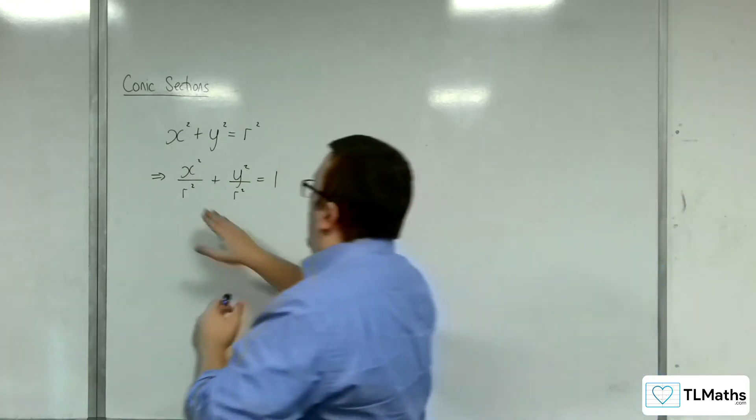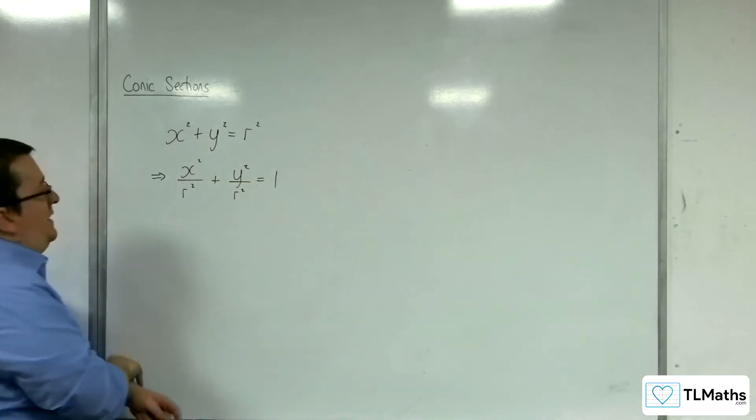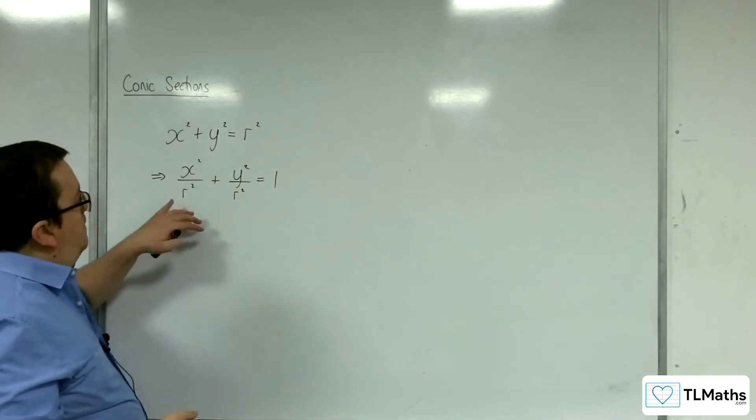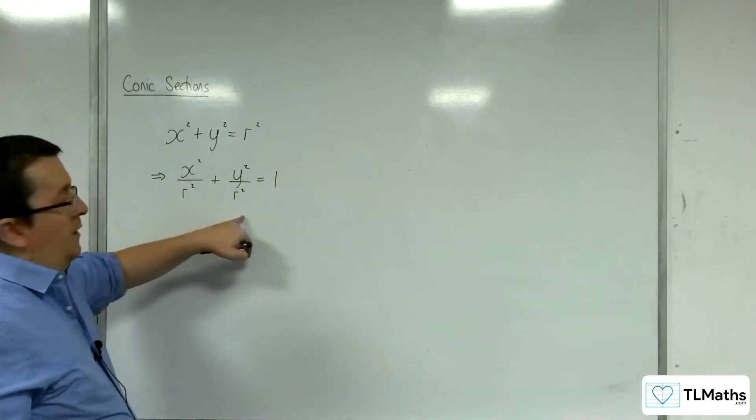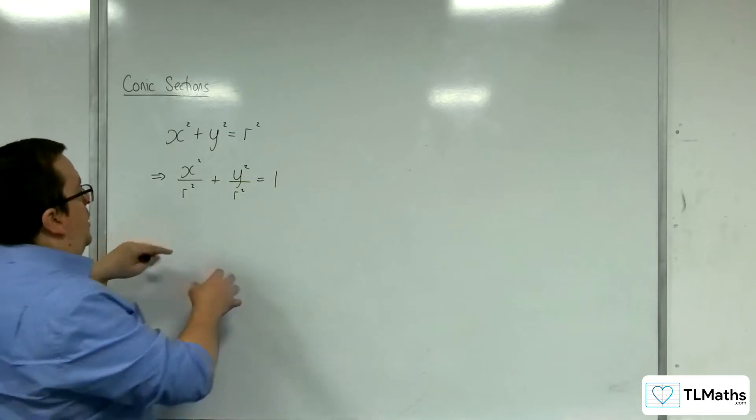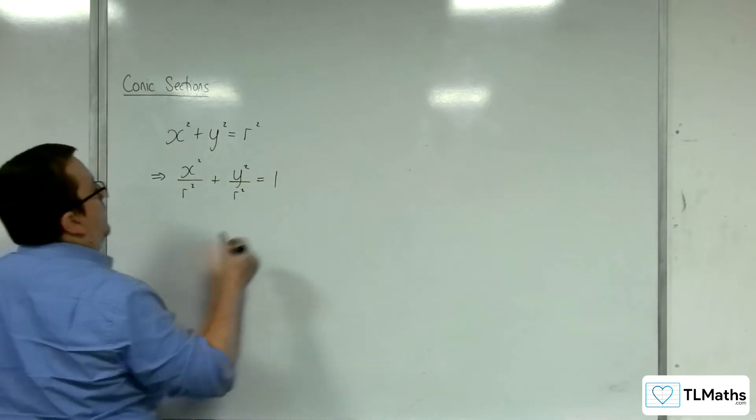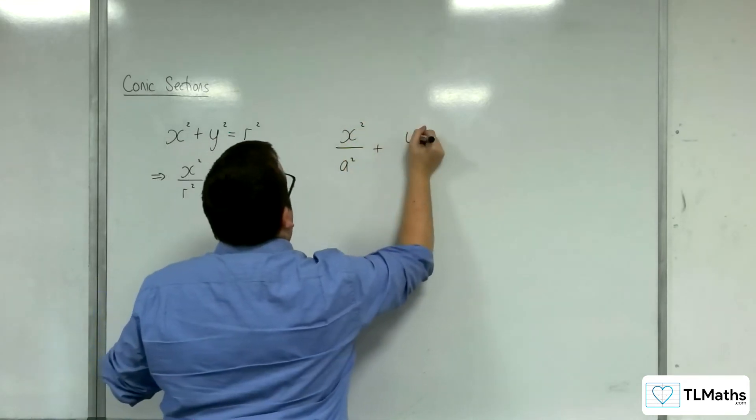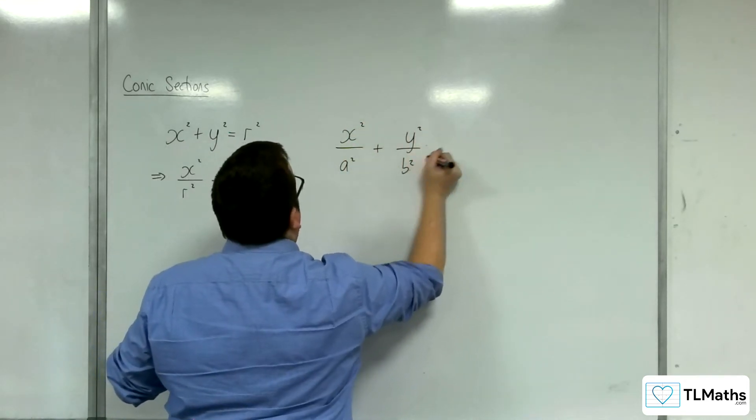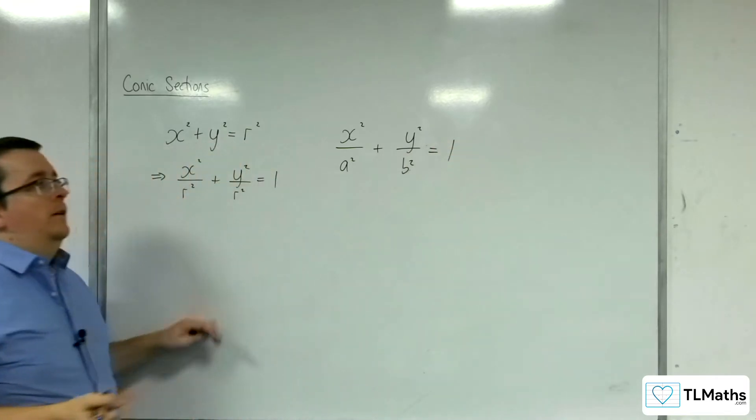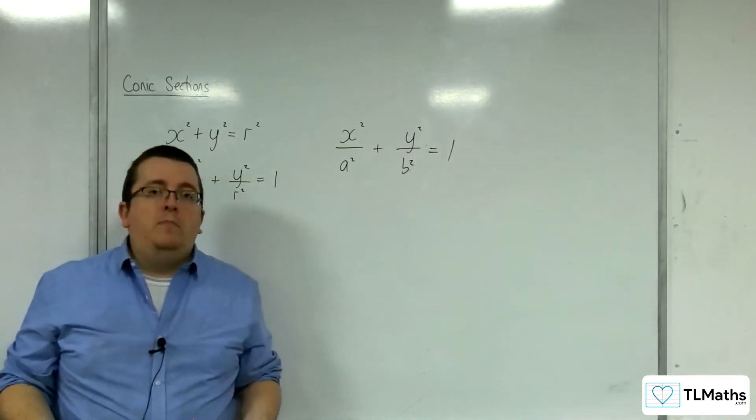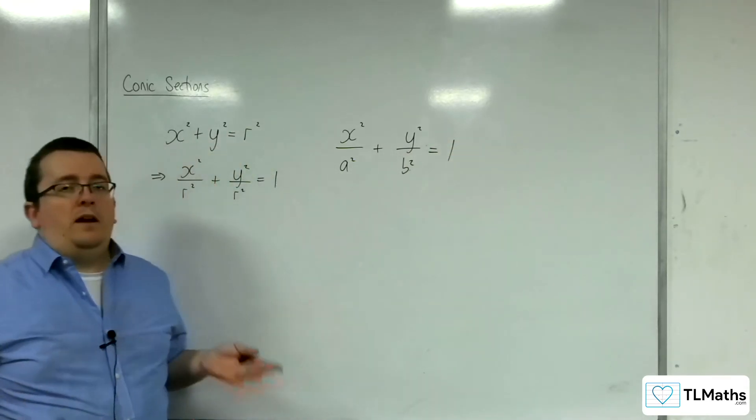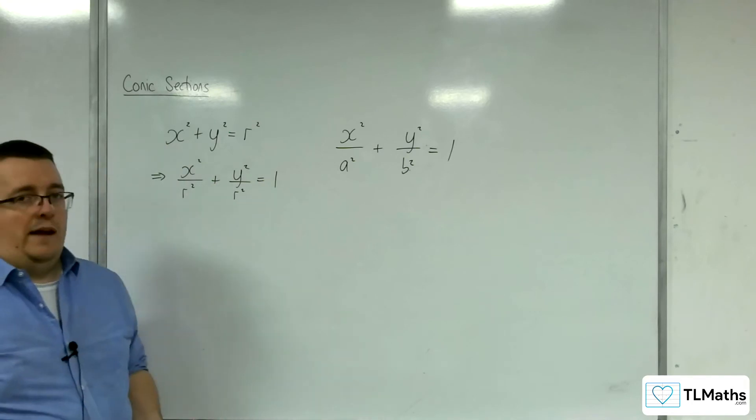So the r value here will be different for an ellipse. So for an elliptical shape, we could have x squared over a squared plus y squared over b squared equals 1. If a and b are the same, then this is a circle. If a and b are not the same, then we have an ellipse.